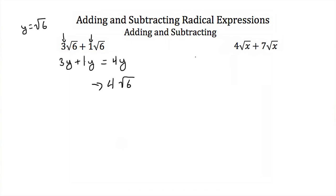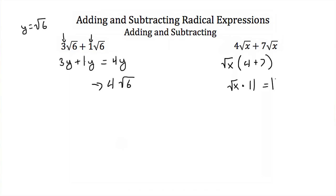Here we have 4 square roots of x plus 7 square roots of x. Imagine factoring out the square root of x as a greatest common factor. We'd have square root of x times 4 plus 7. Now 4 plus 7 is 11, so this is 11 times the square root of x. Or if we just add our coefficients, 4 and 7, we get 11 square roots of x.